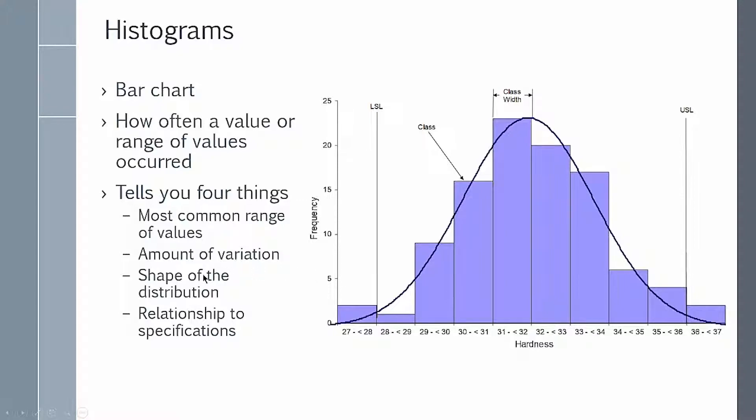It tells you the shape of the distribution. Here we have a normal curve, a bell-shaped curve, and it also shows the relationship to specifications. If you add the specifications, here's the lower spec and here's the upper spec, and you can see that there is material that's out of spec on both sides.